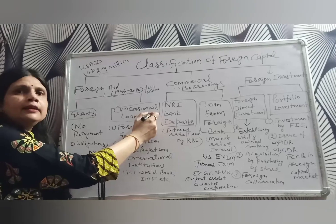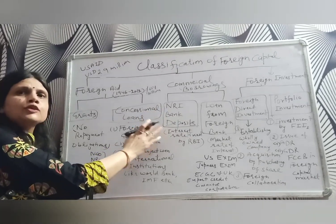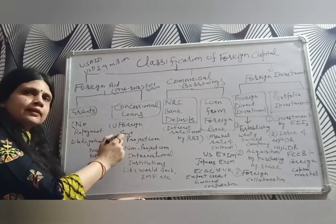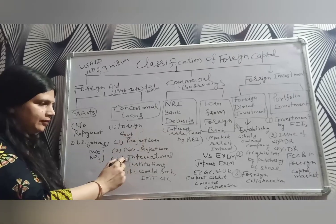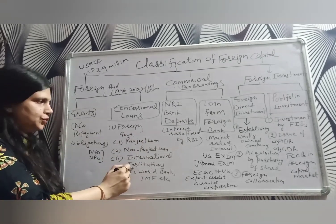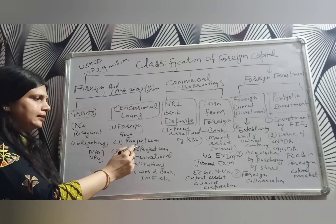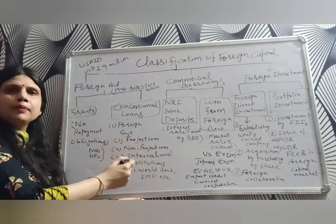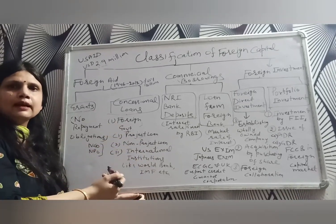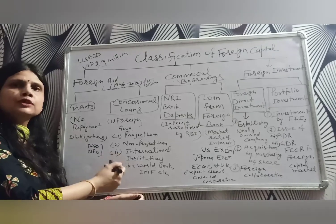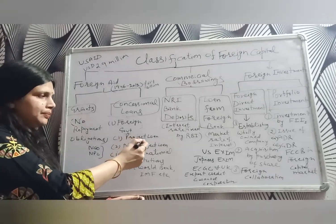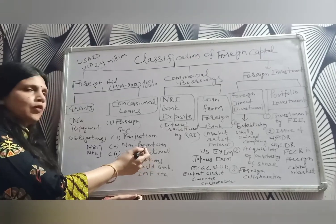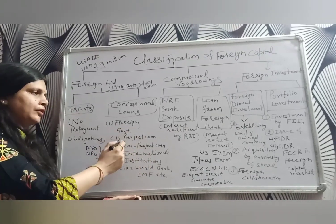The second type is concessional loans. A concessional loan is provided at a rate lower than the market rate. These are provided by foreign governments or international institutions. The foreign government can give such loans for specific projects such as sanitation, building hospitals, schools, or colleges, or for non-project general purposes. This is known as a foreign government loan.